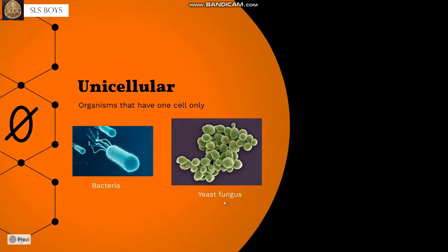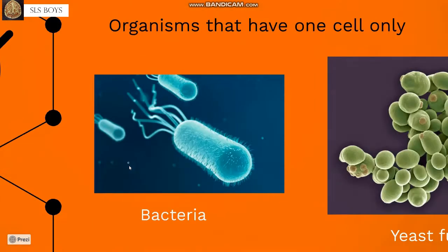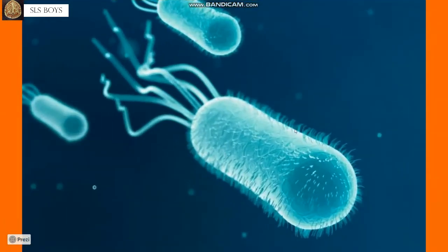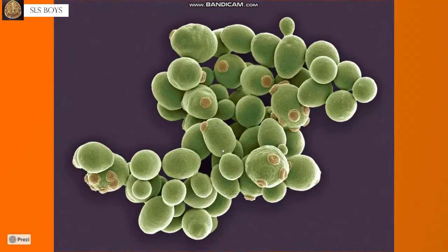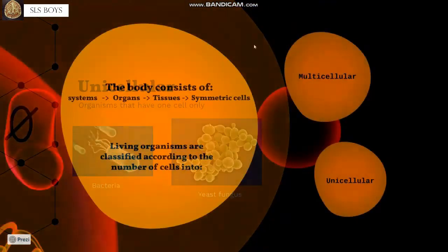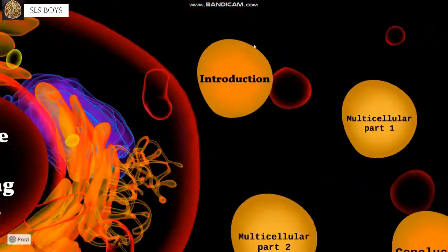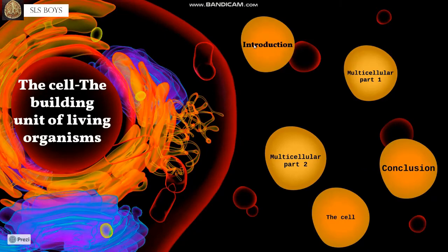Unicellular organisms have only one cell, like bacteria or yeast fungus. As you can see in the picture, this one cell is a bacterium, and in the yeast fungus, each unit is also a single cell.